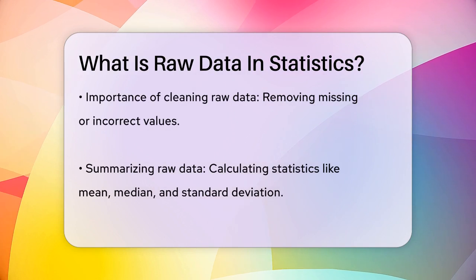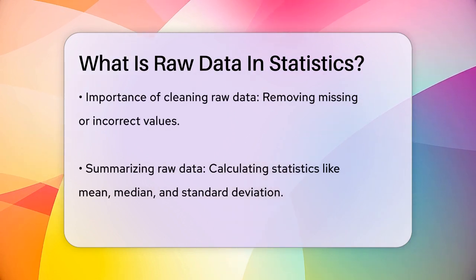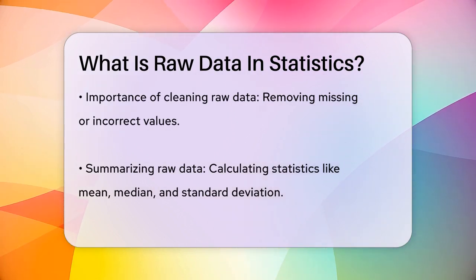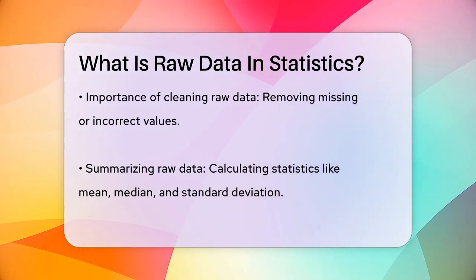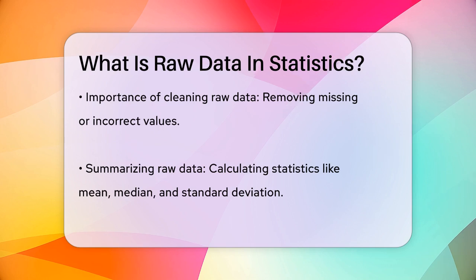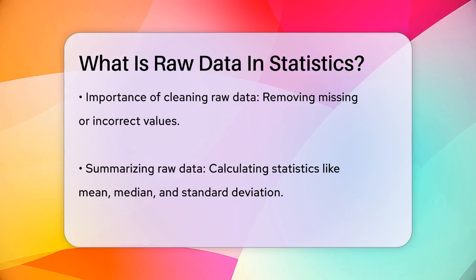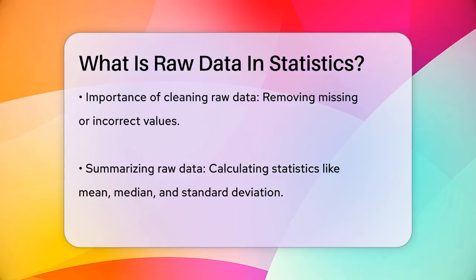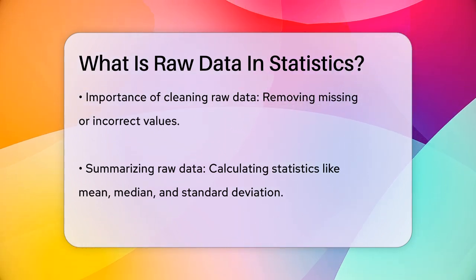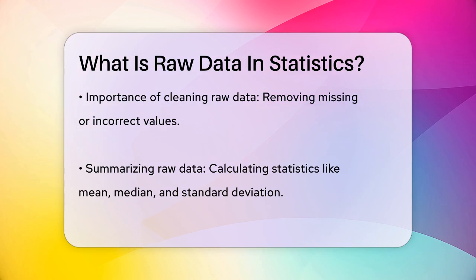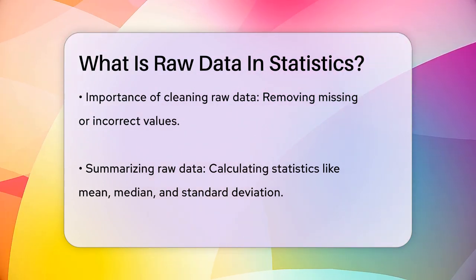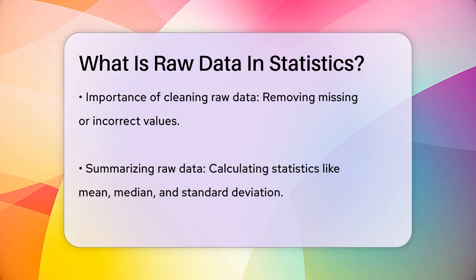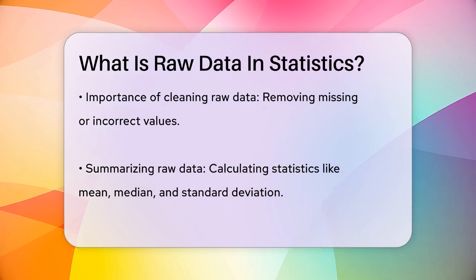Once you have this raw data, the next steps involve cleaning it up, which means removing any missing or incorrect values, and then summarizing and visualizing the data to make sense of it. For instance, the basketball scout might calculate the mean, median, and standard deviation of the minutes played by each player.